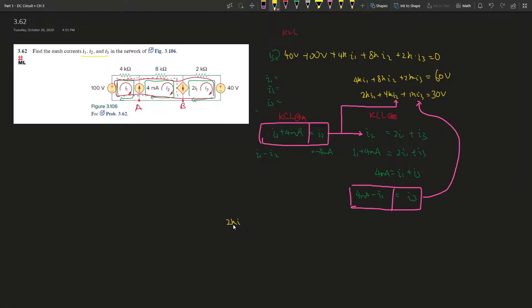So now I will say 2k i1 plus 4k times i2. Now what is i2? i2 is times, i1 plus 4 milliamps, right, this whole thing. And then say plus 1k times i3. What is i3? 4 milliamps minus i1, right? And it's going to give us 30 volts. Okay, so all right, great.